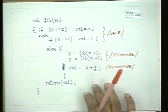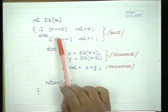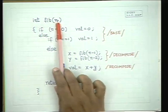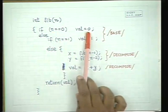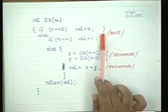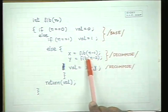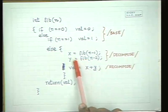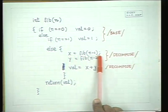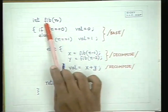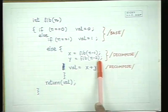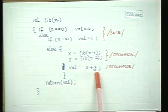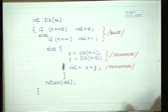Next we tackled the Fibonacci numbers. In the Fibonacci series there are two base conditions: when n is 0 the value is 0, and when n is 1 the value is 1. Unlike factorial where there was only one sub-problem in the decomposition, here we had two sub-problems — fib(n-1) and fib(n-2) — called recursively. We got back the two solutions and recomposed by adding them together.